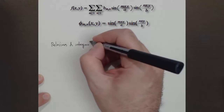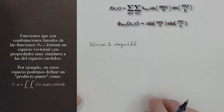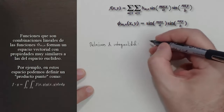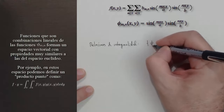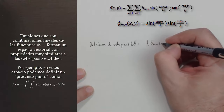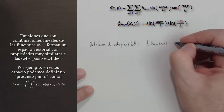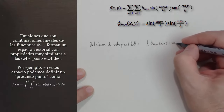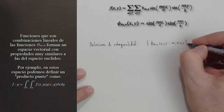En este caso las relaciones de ortogonalidad van a ser muy parecidas. Son las relaciones de ortogonalidad en la familia de todas estas funciones Fi de MN, de X, Y, con M y N mayores iguales que 1.